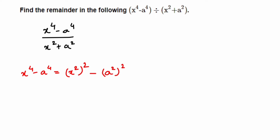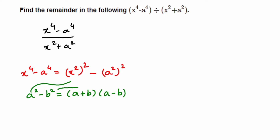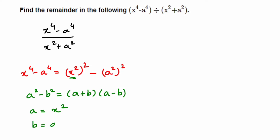I'm going to use the identity: a squared minus b squared equals a plus b into a minus b. In place of a we have x squared, and in place of b we have a squared. Don't get confused between the identity's 'a' and the 'a' in the expression. So based on this identity I'll now write down the factorized form.